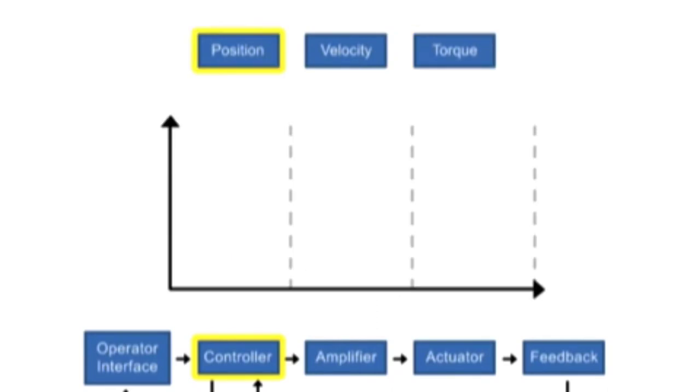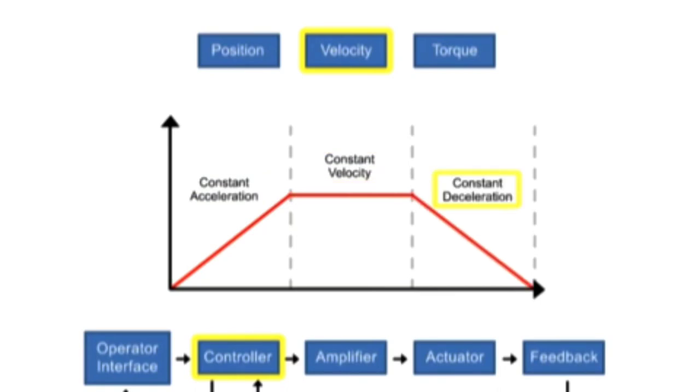Position parameters require a start and a finish position to move a load. The velocity profile resembles a trapezoidal shape. In this example, the acceleration, velocity, and deceleration is constant.